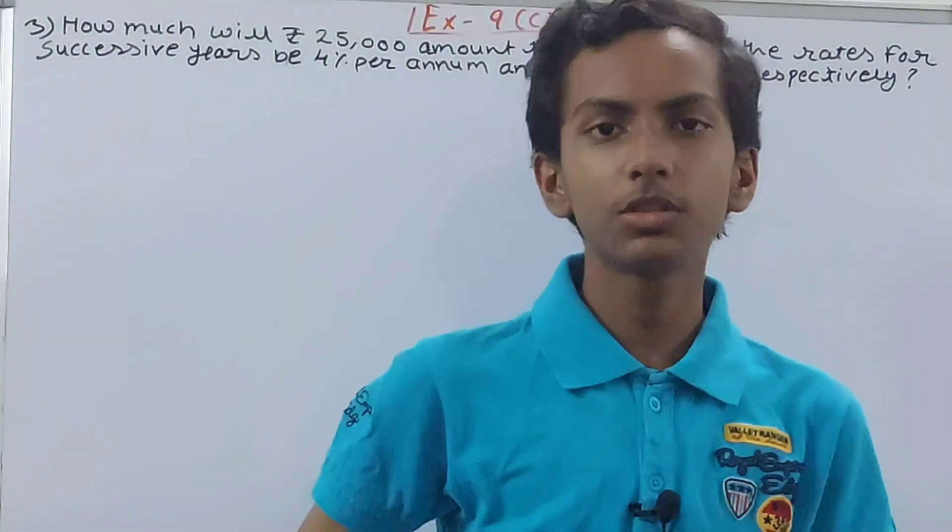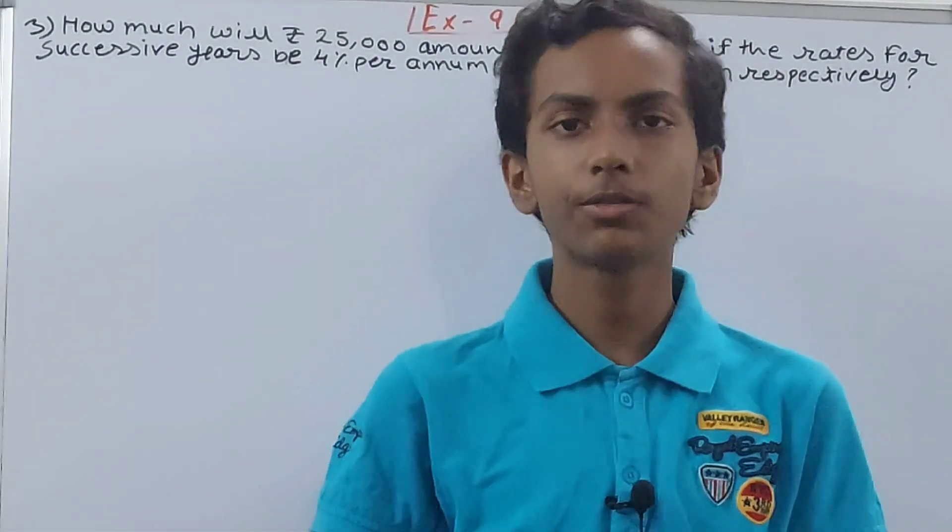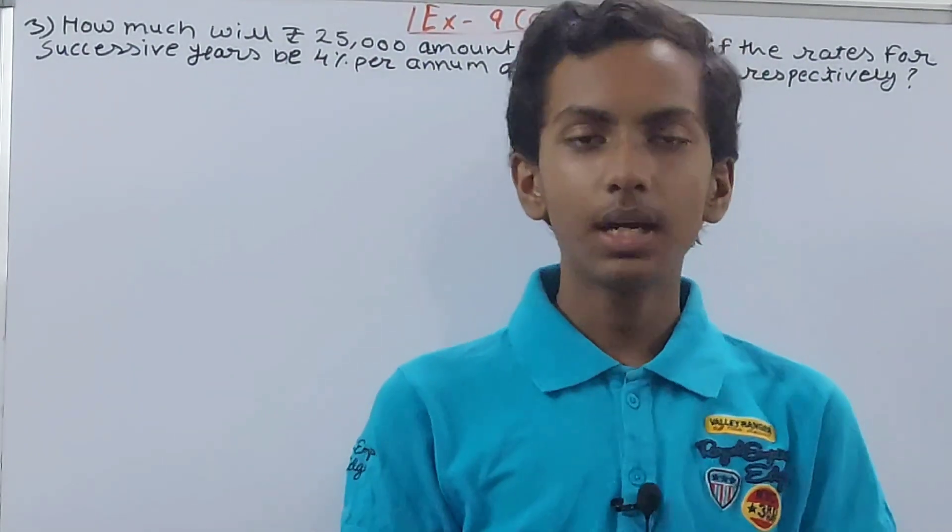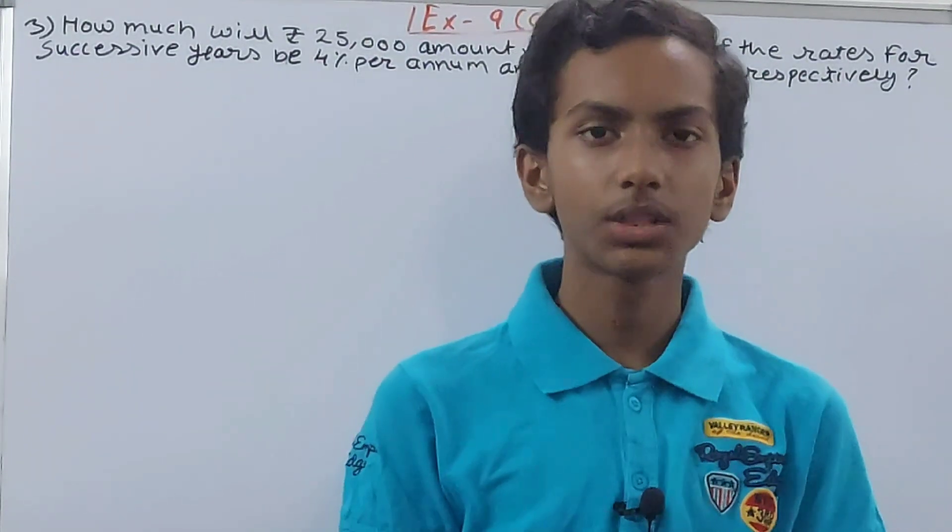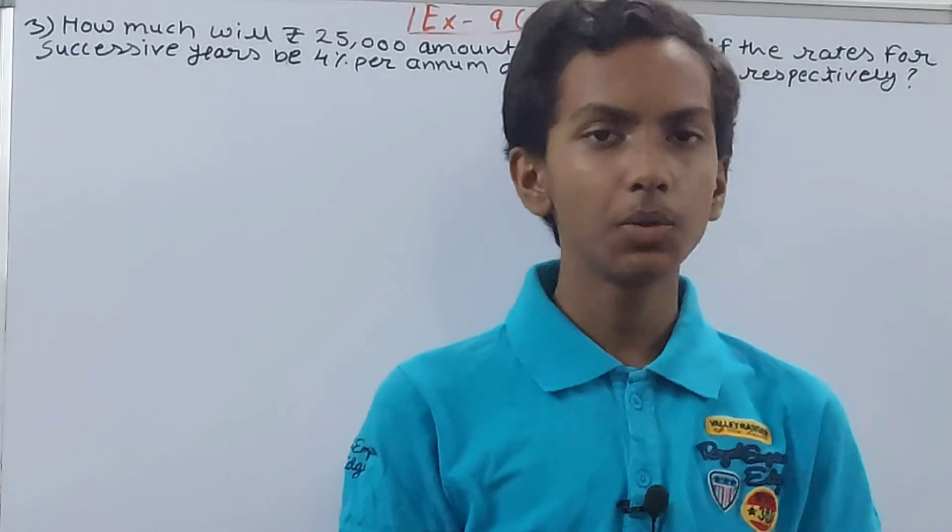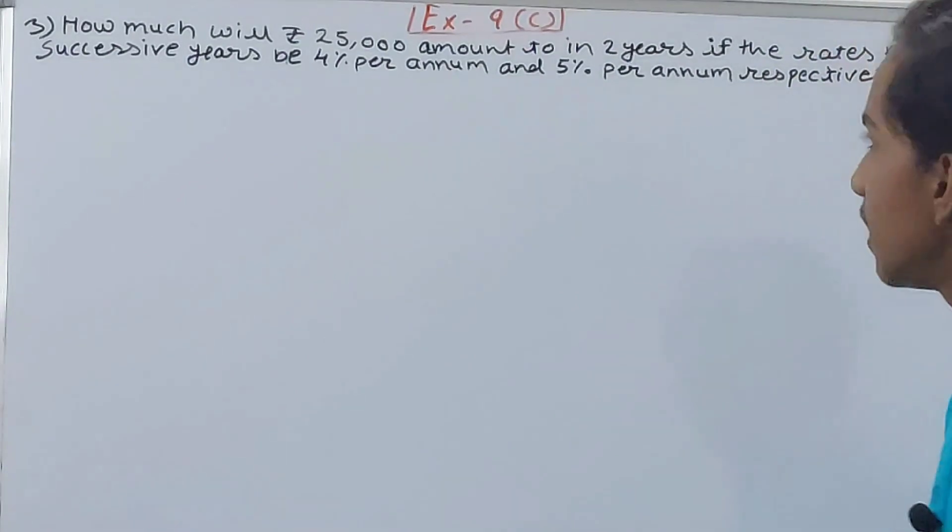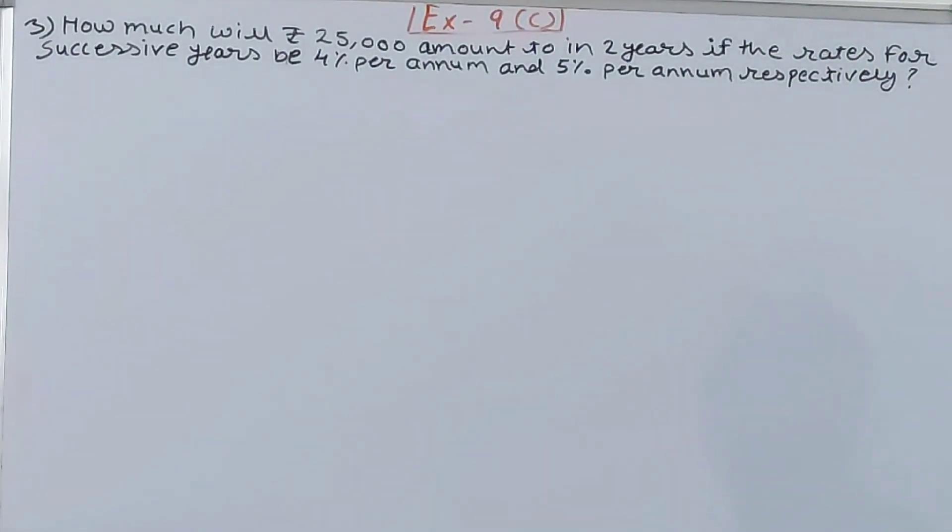Hello friends, welcome back to my YouTube channel. In this video, we are going to solve IGCSE Mathematics Class 8, Chapter 9 Simple Interest and Compound Interest, Exercise 9C, Question Number 3. The question is: How much will Rs. 25,000 amount to in two years if the rates for successive years be 4% per annum and